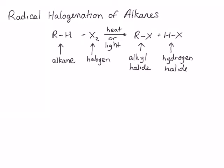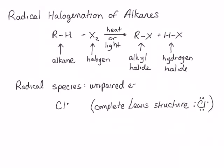It is called radical halogenation because it involves the formation of compounds that have an unpaired electron. Typically, we indicate a radical species by drawing the atom or the molecule with a single electron. For example, let's look at a chlorine radical. The complete Lewis structure of a chlorine radical would have seven electrons, but we don't indicate the paired electrons because it's the single unpaired electron that is responsible for the radical's chemistry.